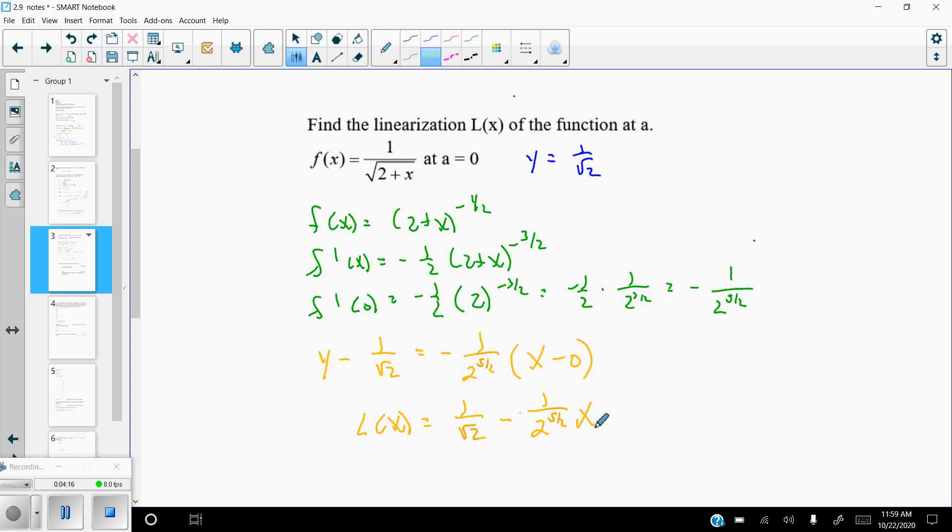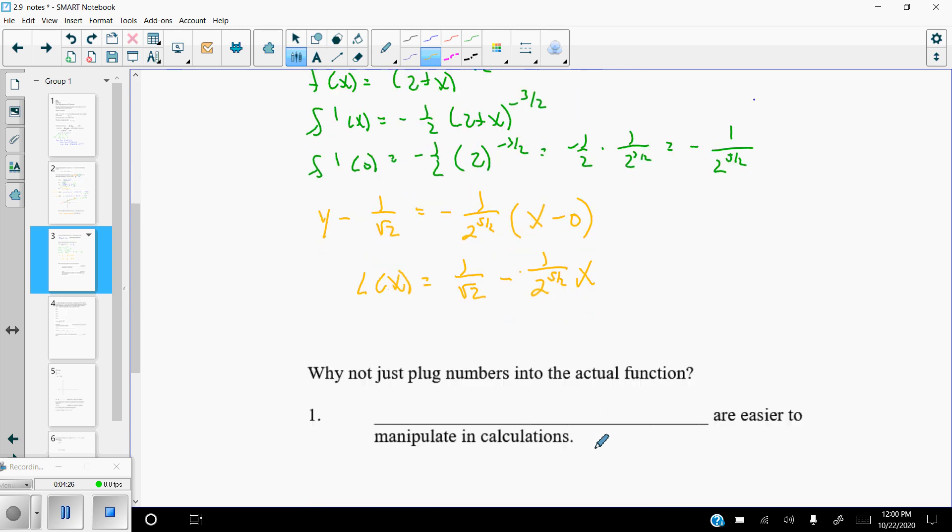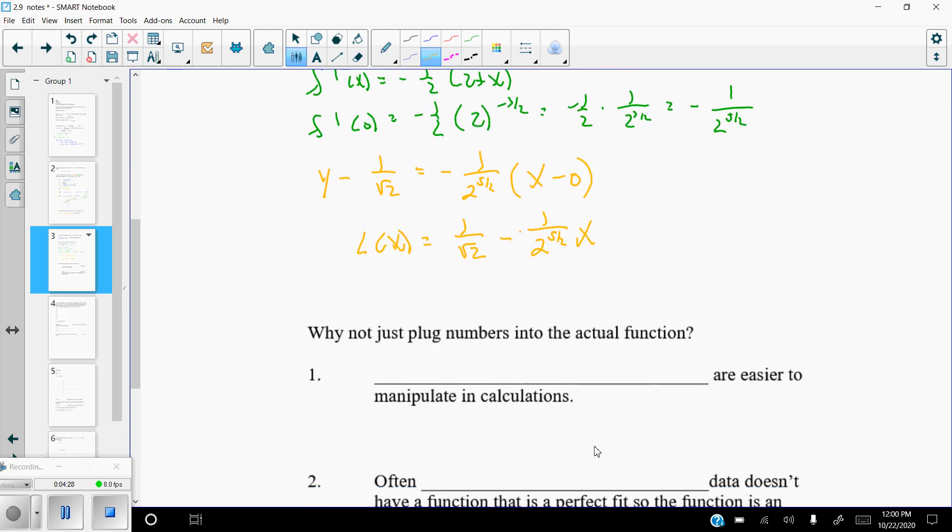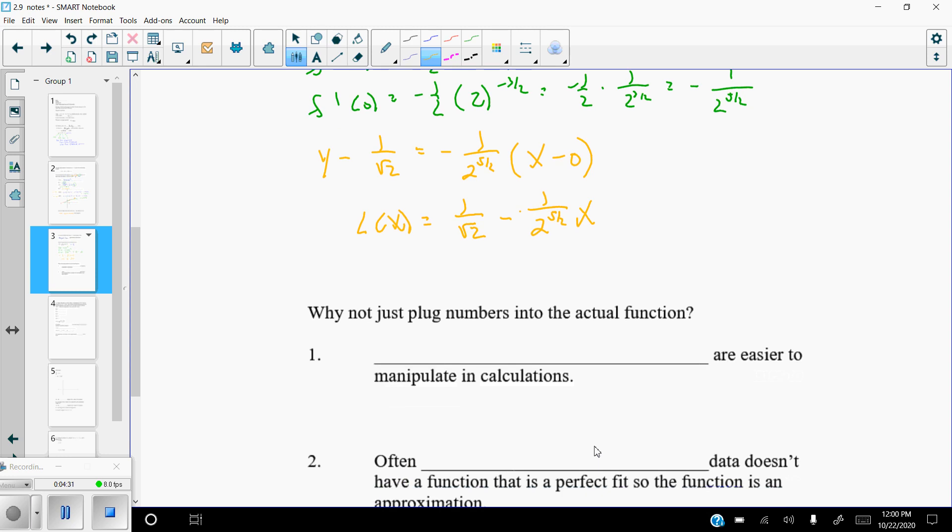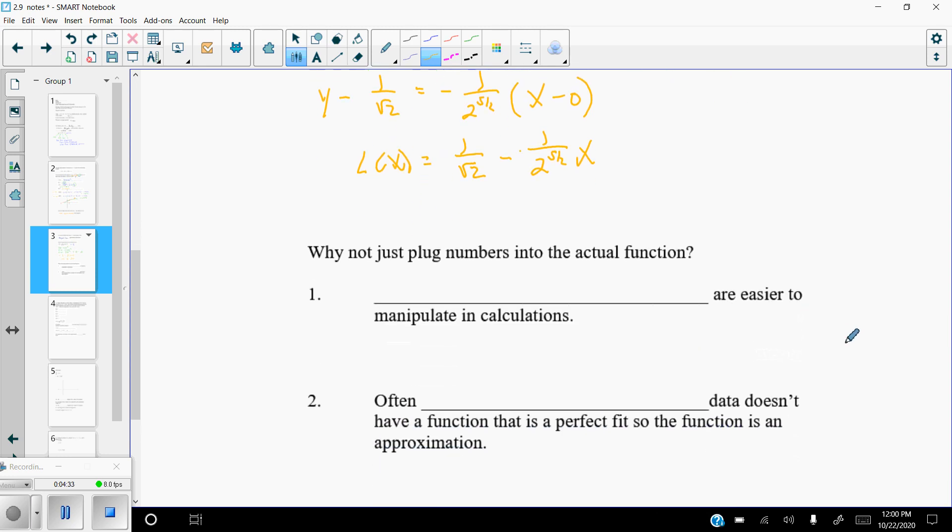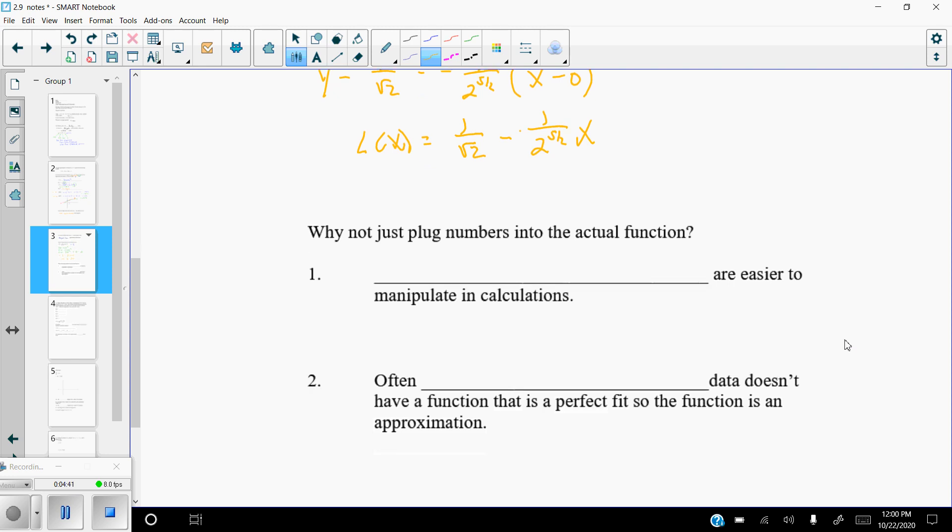Okay, and we could use that to approximate things, although that would be kind of messy because of those values, but that's what we could do. So questions that you might have already asked yourself is, why would I do all this? Why not just plug the numbers into the actual function? And that's a really good question. It's a legitimate question. If you have a way to plug it in, why wouldn't you just plug it into the original function? It's really two reasons. The first one is not really the best reason, but it is a reason.